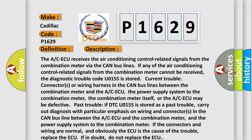Current trouble: connectors or wiring harness in the CAN bus lines between the combination meter and the A/C-ECU. The power supply system to the combination meter, combination meter itself, or the A/C-ECU may be defective. Past trouble.